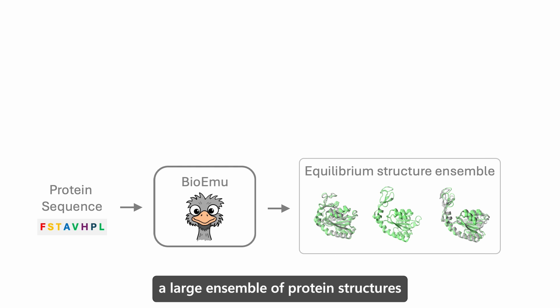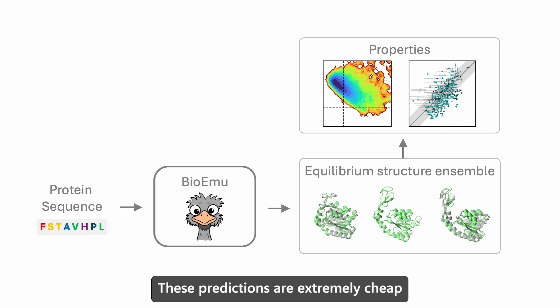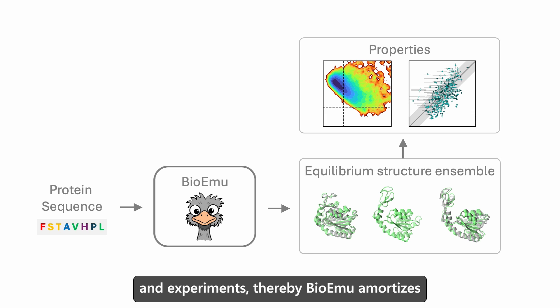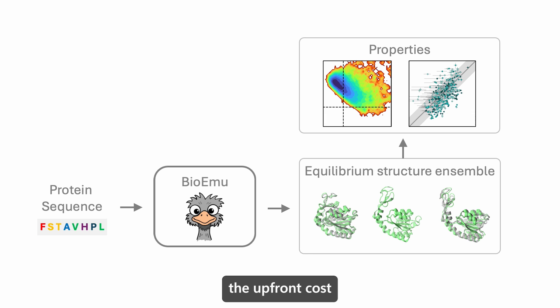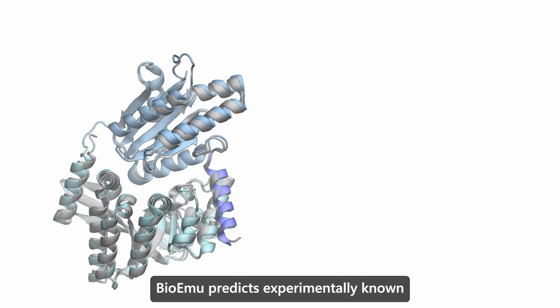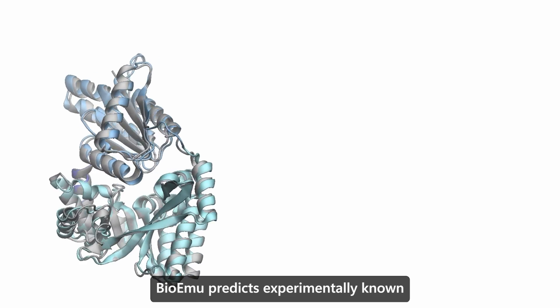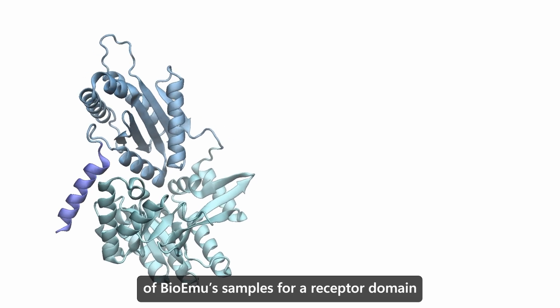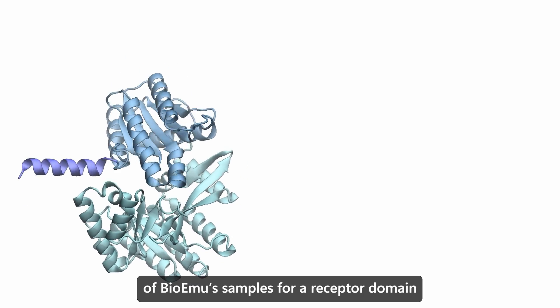At inference time, we query BioEMU with a protein sequence. BioEMU generates a large ensemble of protein structures from which various properties of the protein can be predicted. These predictions are extremely cheap and fast compared to MD simulation and experiments, thereby BioEMU amortizes the upfront cost of generating its training data. BioEMU predicts experimentally known conformational changes.